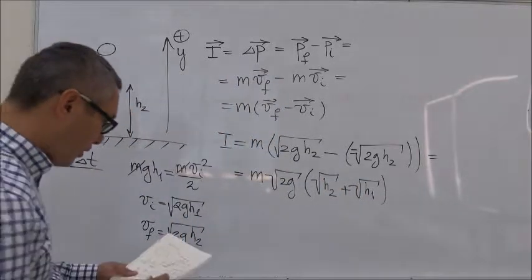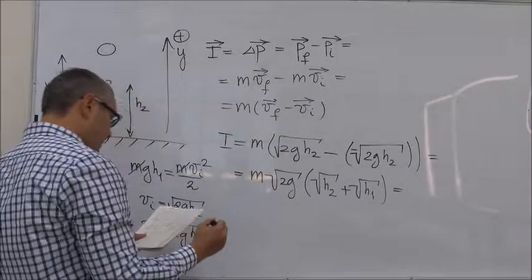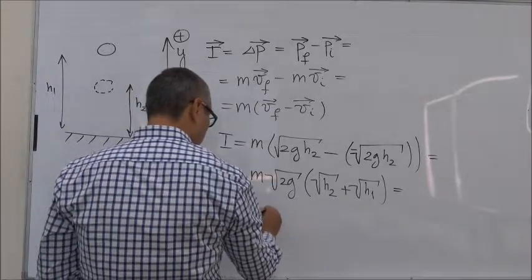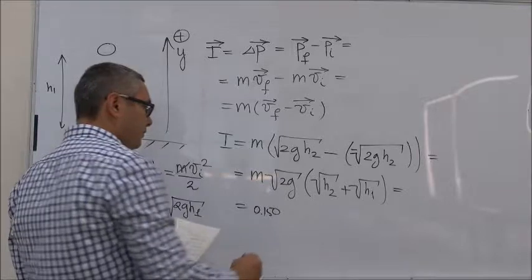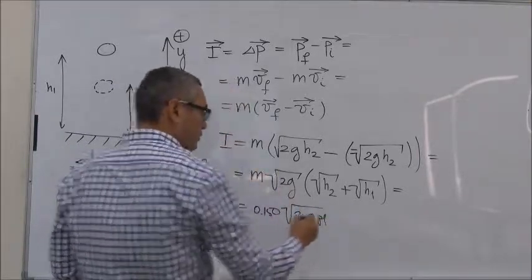In the problem we are given the values for the mass, which is 0.15 times 2 times 9.81, gravitational acceleration.